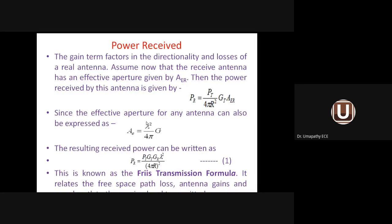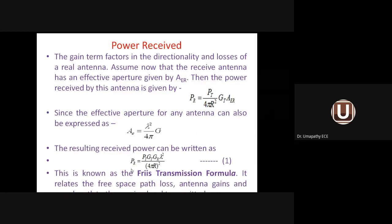The effective aperture for any antenna is A_e = λ² / (4π) × G. Substituting this into the power received equation gives P_r = P_t × G_t × G_r × (λ / 4πR)². This is Equation 1, called the first form of the Friis transmission formula.